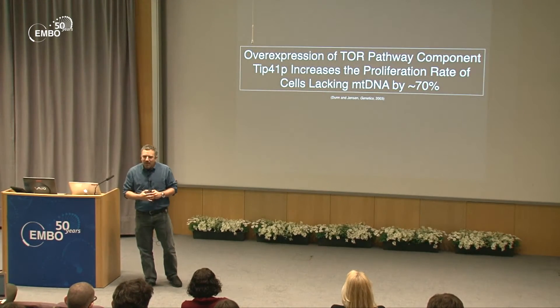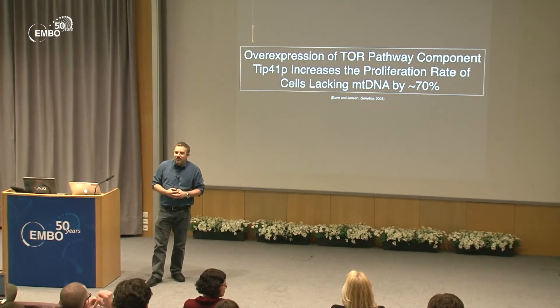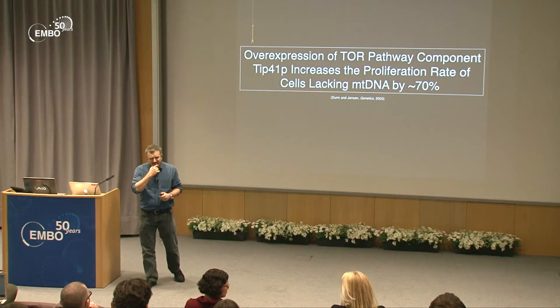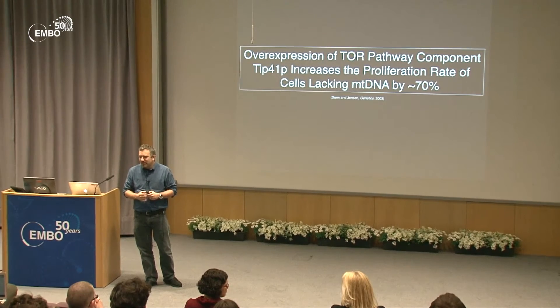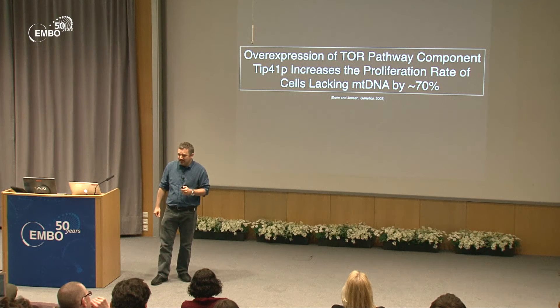An observation from my PhD work was that overexpression of a TOR pathway component called Tip41, first characterized by Michael Hall, increases the proliferation rate of cells lacking mitochondrial DNA by around 70% — a very substantial increase.